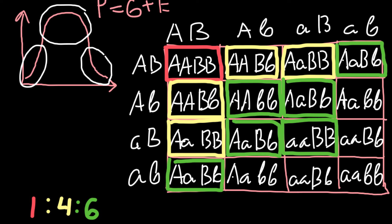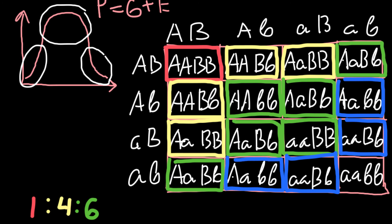Next, let's find plants with only one dominant allele. There are four such genotypes in the table, each adding only 10 centimeters, so those plants would be 50 centimeters tall — giving us the second '4' in our ratio. When all alleles are recessive, we expect the plant to be 40 centimeters tall, and that genotype appears once — giving us the final '1'. So our distribution is 1 to 4 to 6 to 4 to 1.